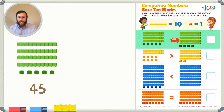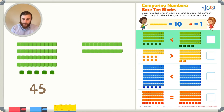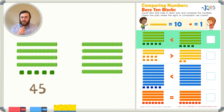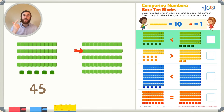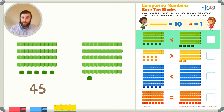Let's compare it to the number on the right. We can first start by counting how many longs there are. In this number we can see 1, 2, 3, 4, 5 longs. Do you think this number with 5 longs or 5 tens is going to be greater or less than 45? Let's count the 10s: 10, 20, 30, 40, and 50. So already that's greater than 45. Let's count the cubes just so we can get a final count: 51, 52, 53, 54. So 54 is greater than 45.